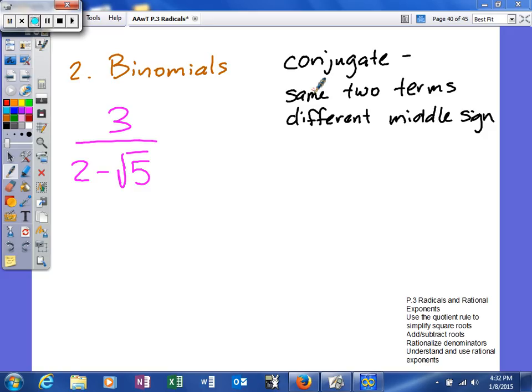So we're trying to get the radical out of our denominator. Our denominator is 2 minus the square root of 5. So what we're going to do is multiply the top and the bottom by 2 plus the square root of 5. So as you can see, the same two terms, just a different middle sign.